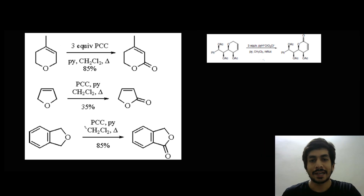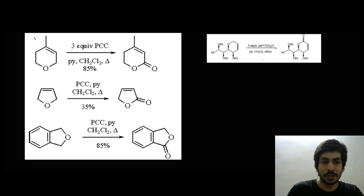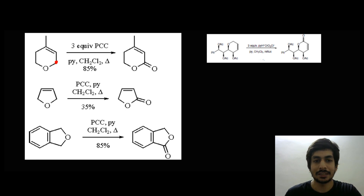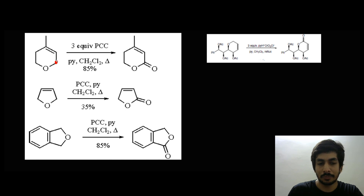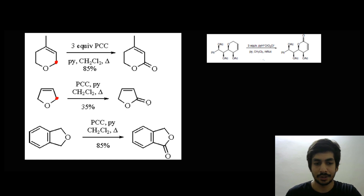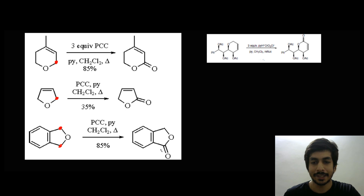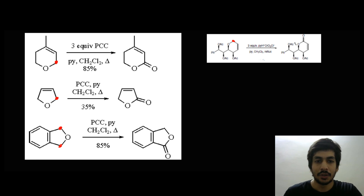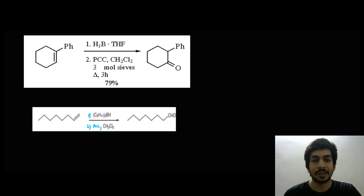PCC also oxidizes active methylene carbons — carbons that have acidic protons attached. In cyclic ethers, this transformation is especially prominent, particularly for benzylic and allylic ethers. In the examples shown, the active methylene carbon in each cyclic ether is selectively oxidized by PCC. Multiple examples demonstrate this selectivity: in each case, the carbon flanked by the ether oxygen and a π system is the one oxidized.